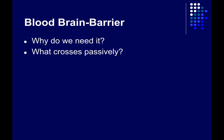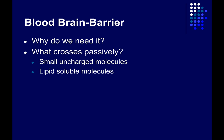Certain things can cross passively through the blood-brain barrier — it doesn't keep everything out. Small, uncharged molecules like carbon dioxide, oxygen, and water can pass through pretty easily. Lipid-soluble molecules — things that dissolve in oil or fat — can generally get through pretty easily as well. Certain drugs, for example THC and heroin, can cross through because they're soluble in fat.